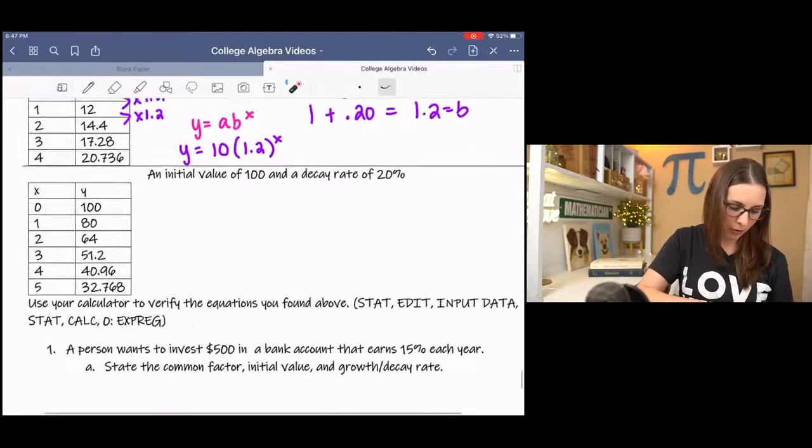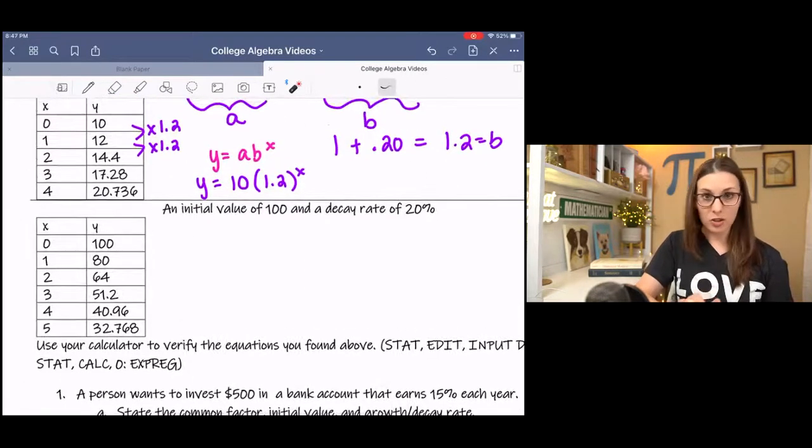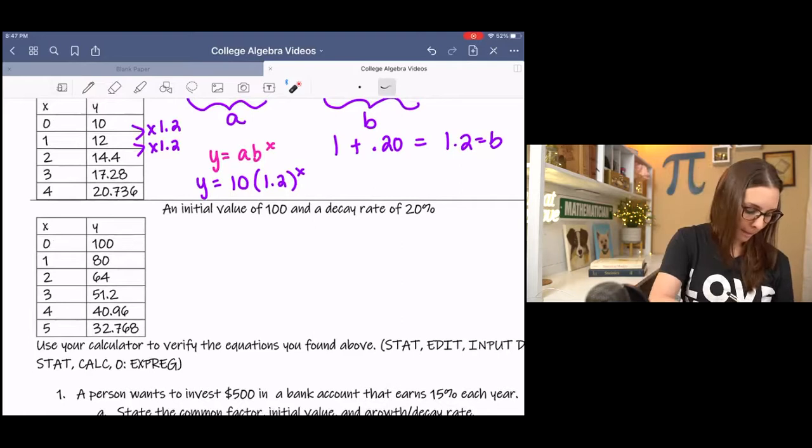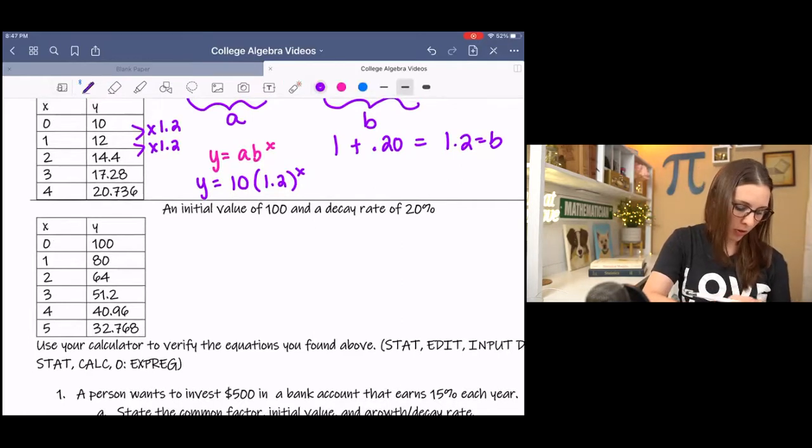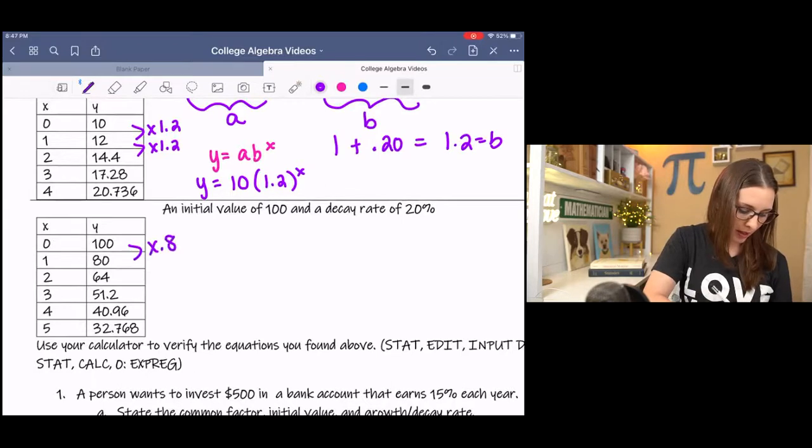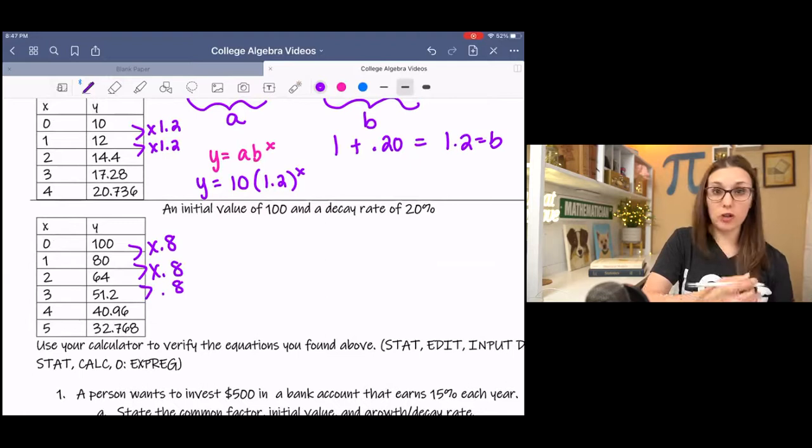Go ahead and try the next example if you can. Pause it, try and come back. From the table of values, you can see that we're multiplying by 0.8 each time. So that's the change factor with an initial value, a y-intercept of 100.